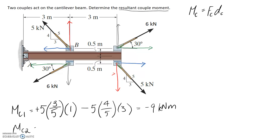I'll call this MC2. Looking at the vertical part first: the size is 6 times sine of the angle, since we need the opposite side of the triangle. We then multiply by the separation distance between the two vertical forces, which corresponds to 3 meters. These vertical forces will try to rotate anti-clockwise against each other, so we put that in as positive in the equation.